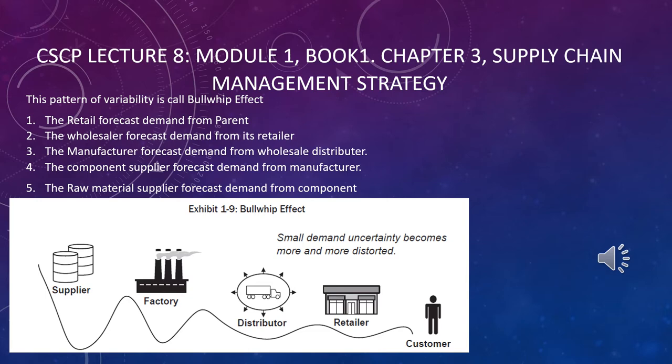There's a concept called the bullwhip effect — small demand uncertainty becomes more and more distorted. Let's go for an example of a retailer. A retailer named ABC may be situated in some location, and due to unknown reasons there may be a sale of 1,000 diapers instead of 500 diapers.